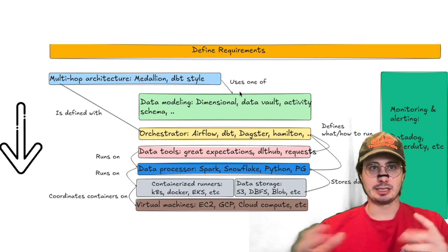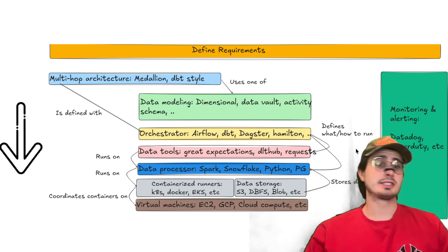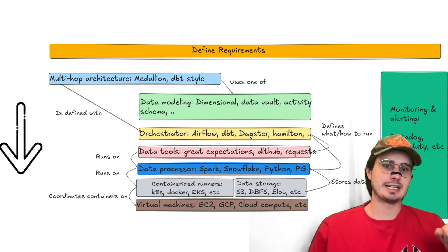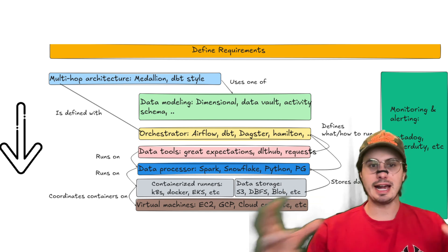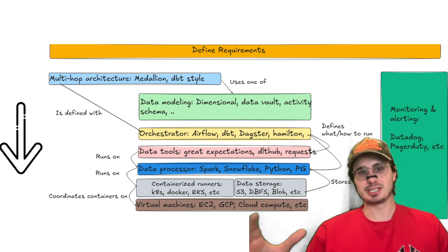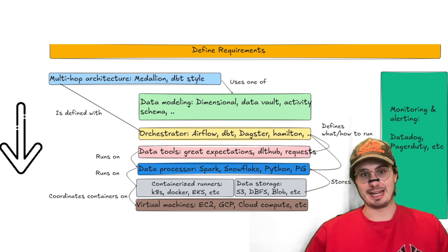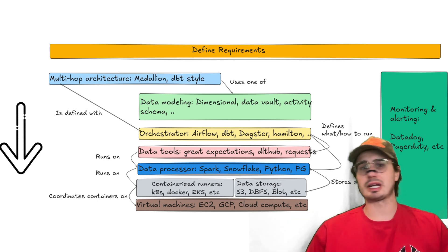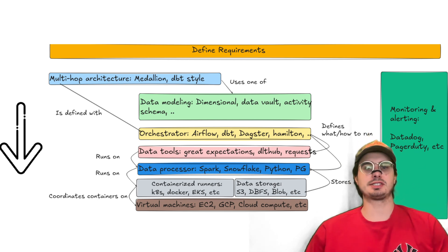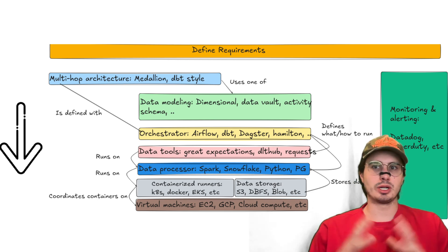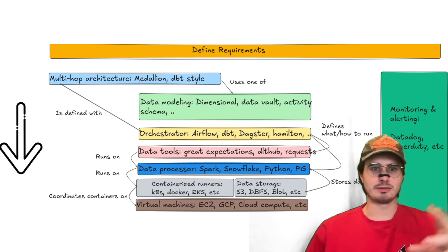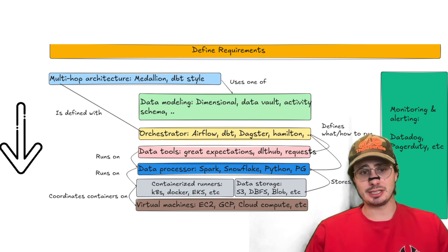Why this matters: shared components amplify both success and mistakes. Over-standardization slows innovation and forces different use cases into tools that don't support them. Under-standardization creates chaos — one team using Parquet, another Iceberg, another Delta Lake, making it really hard to integrate silos into one shared data mesh. Common components to standardize on include messaging queues like Kafka or PubSub, databases like Snowflake, BigQuery, or Postgres, your observability stack, and IAM and secrets management.